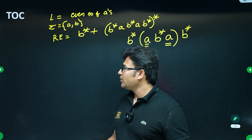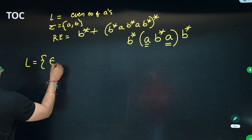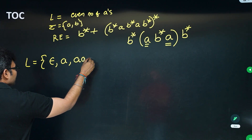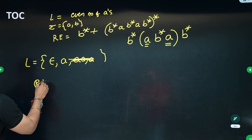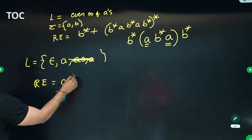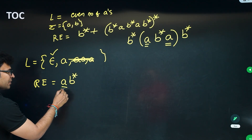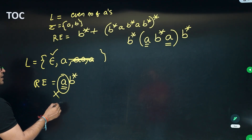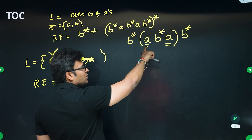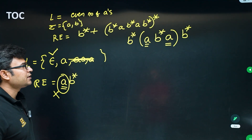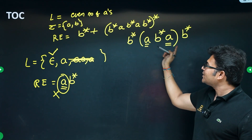For example, if a language contains epsilon and the regular expression is ab*, you can directly rule it out because the minimum string generated by ab* is 'a', not epsilon. In our language, even number of a's includes zero a's, so epsilon must be in the language. The student's expression b*ab*ab* does not generate epsilon, so you can rule it out.